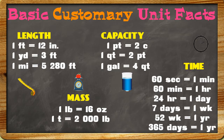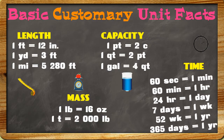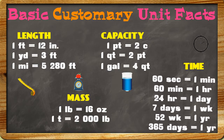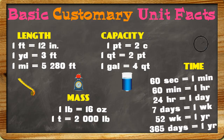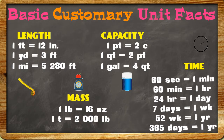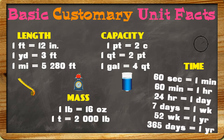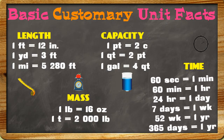Now, when we look at the units of time, the facts for time in customary and metric are the same. Listen to this jingle: 60 seconds in a minute, 60 minutes in an hour, 24 hours in a day — we do it measurement our way! 7 days in a week, 52 weeks in a year, 365 days in a year.